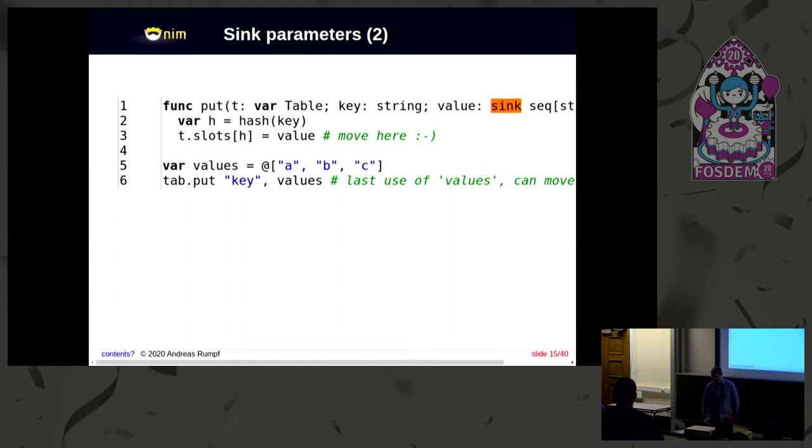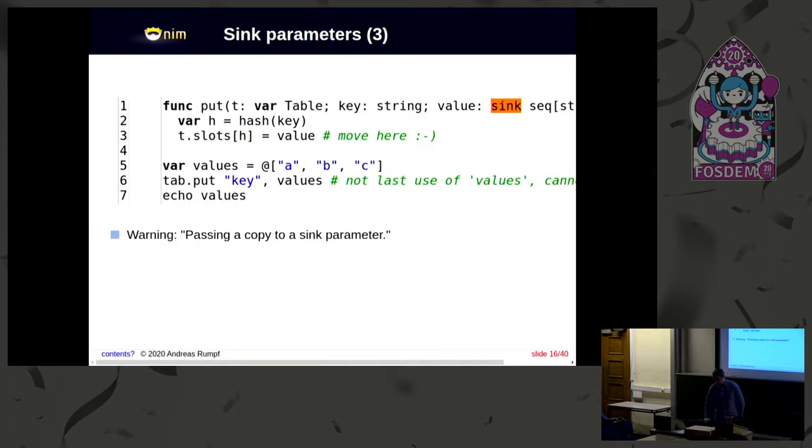So again, if I have values like a list with three strings inside and I don't use them afterwards, I can move. Now what happens if I use values afterwards? Then we, since we want to take ownership of the guts of this object, the compiler produces a warning for us, telling us like, you are about to sink something that is used afterwards and I will make a copy for you to ensure safety. So this has also been a design criterion. If you get it wrong, the performance suffers, but no weird crashes. And that's true. And the compiler warns about the performance aspect. And currently this warning is a bit too aggressive, so I need to make this a bit better.